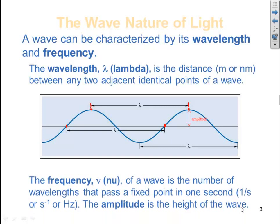The frequency, nu, of a wave is the number of wavelengths that pass a fixed point in one second. Typically, we're talking about units of cycles per second, one per second, or second minus one, or the term hertz.